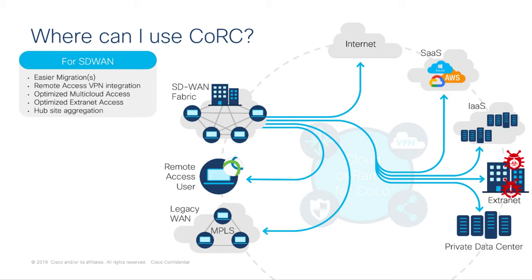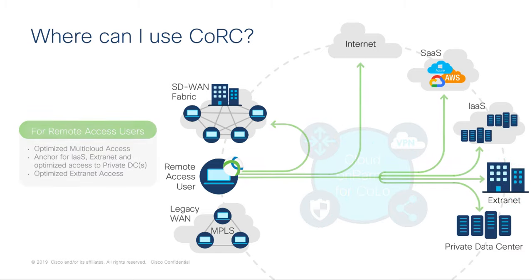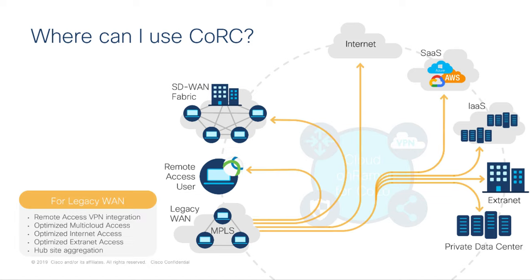And lastly, given the impact of the recent health crisis, what if you could spin up remote access VPN capacity across the entire world with just a few clicks, now that much of your workforce will be working from home? These are the use cases Cloud onRamp for Colocation looks to solve, and many more.